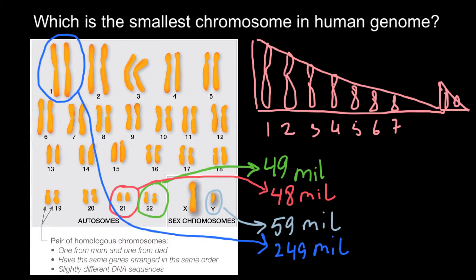There are also some peculiarities about the karyotype. For example, the Y chromosome, though it is not the smallest, has the smallest number of genes. There are different scientific methods to predict how many genes are on a chromosome — one is to find how many are expressed and produce actual proteins that take part in biological processes. Another is a bioinformatic method where we predict the number of genes by looking at the sequence, finding start codons and stop codons using special software.